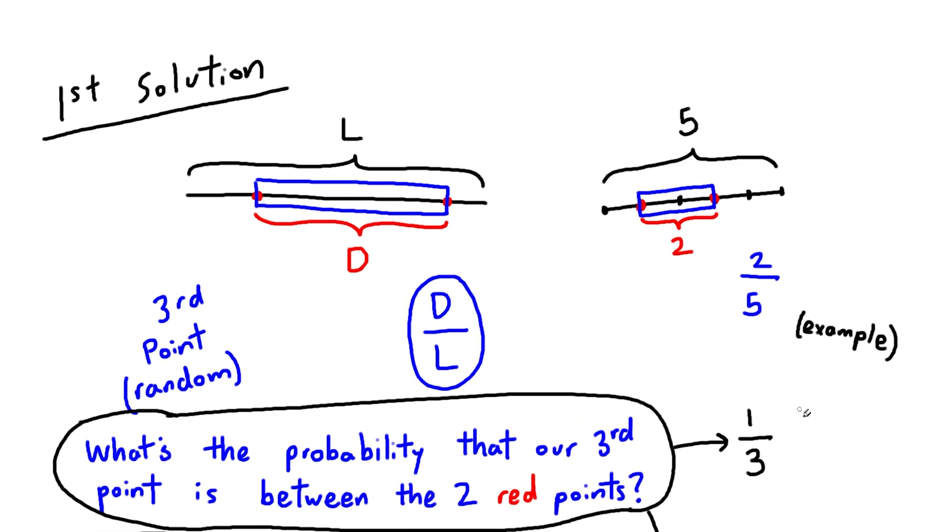So now we've answered the question two different ways, and since it's the same question, we've got to have the same answer, so we can equate these two and get D equals L over 3.